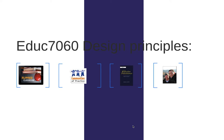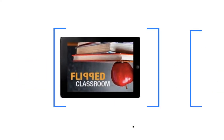EDUC 7060 is underpinned by four design principles. The first is the notion of a flipped classroom. A flipped classroom is a modification of the typical classroom model. In a typical classroom, transmission of knowledge happens in the classroom, and the actual learning — when students undertake exercises, quizzes, or homework assignments — happens at home.